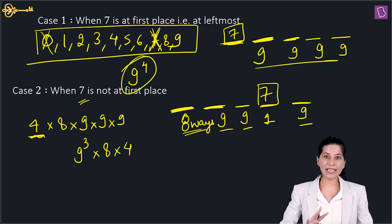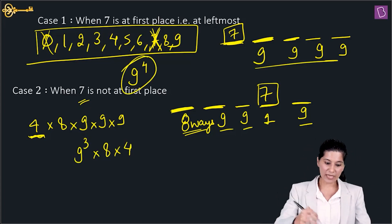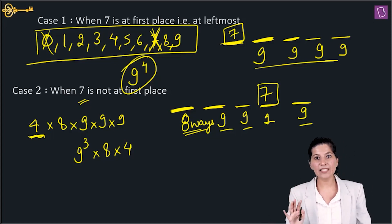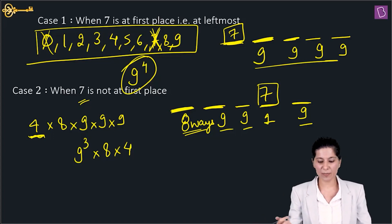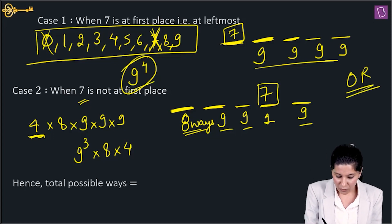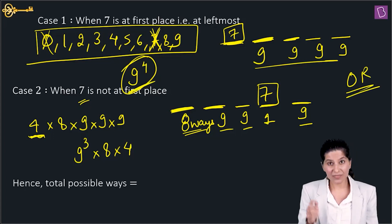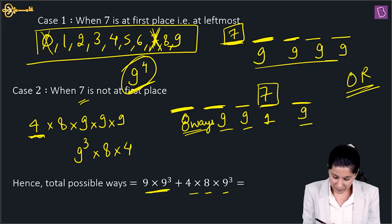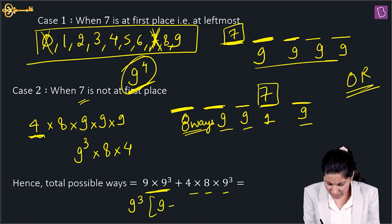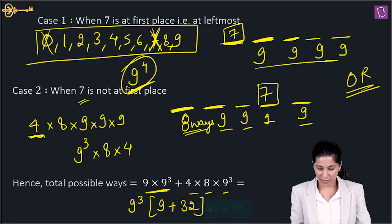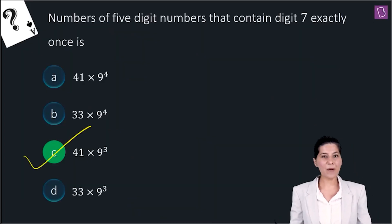Either Case 1 or Case 2 applies — since it's 'or', we add: 9⁴ + 4 × 8 × 9³. Taking 9³ common: 9³(9 + 32) = 41 × 9³. The answer is 41 multiplied by 9 cubed, which corresponds to option C.